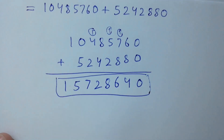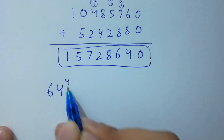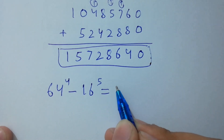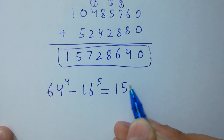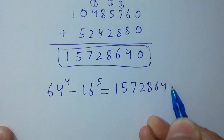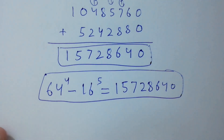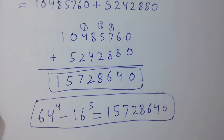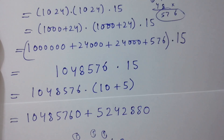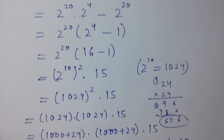So here, 64 to the power 4 minus 16 to the power 5 is equal to 15,728,640, which is our final answer. Thanks for watching this video. Please subscribe to this channel to get notifications of my new videos. Bye.